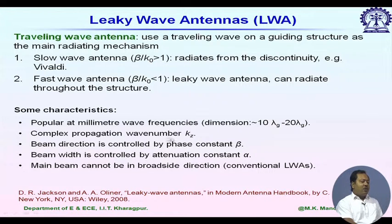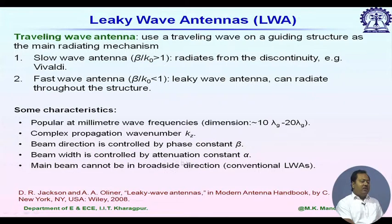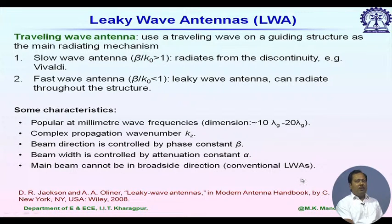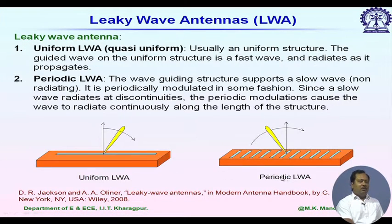The beam direction is controlled by the phase constant beta, while the beam width depends on the attenuation constant alpha — a smaller alpha gives a narrower beam width. For conventional leaky wave antennas, the main beam cannot be in the broadside direction. Under leaky wave antennas, there are two categories: uniform leaky wave antennas and periodic leaky wave antennas.